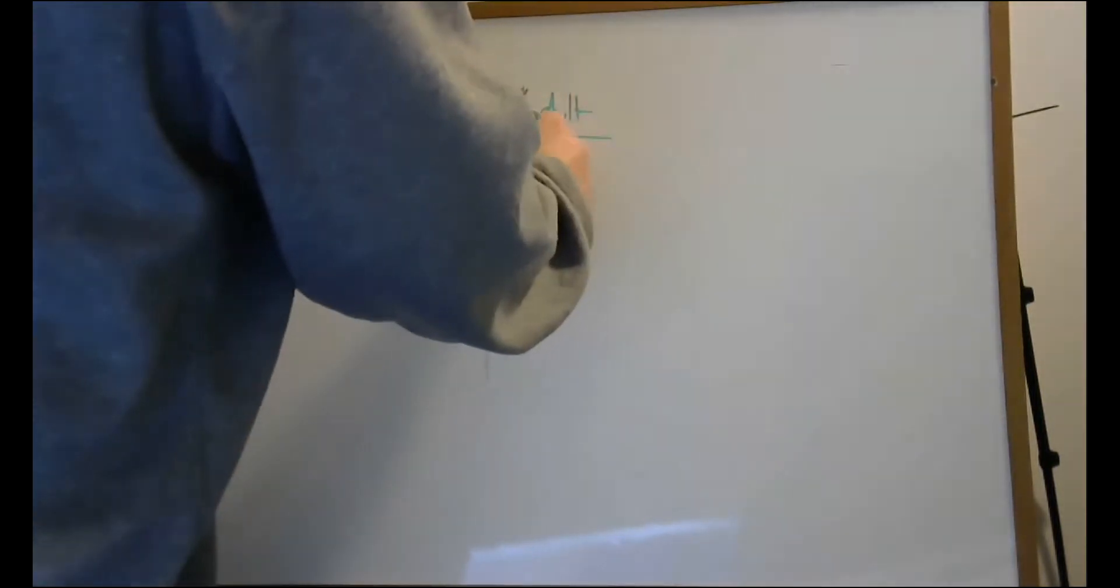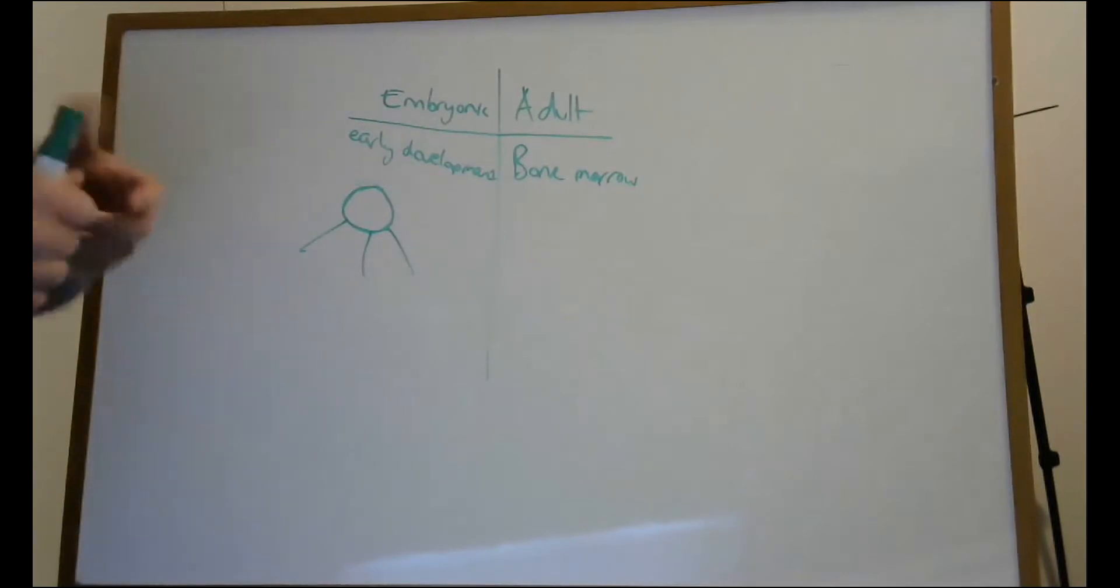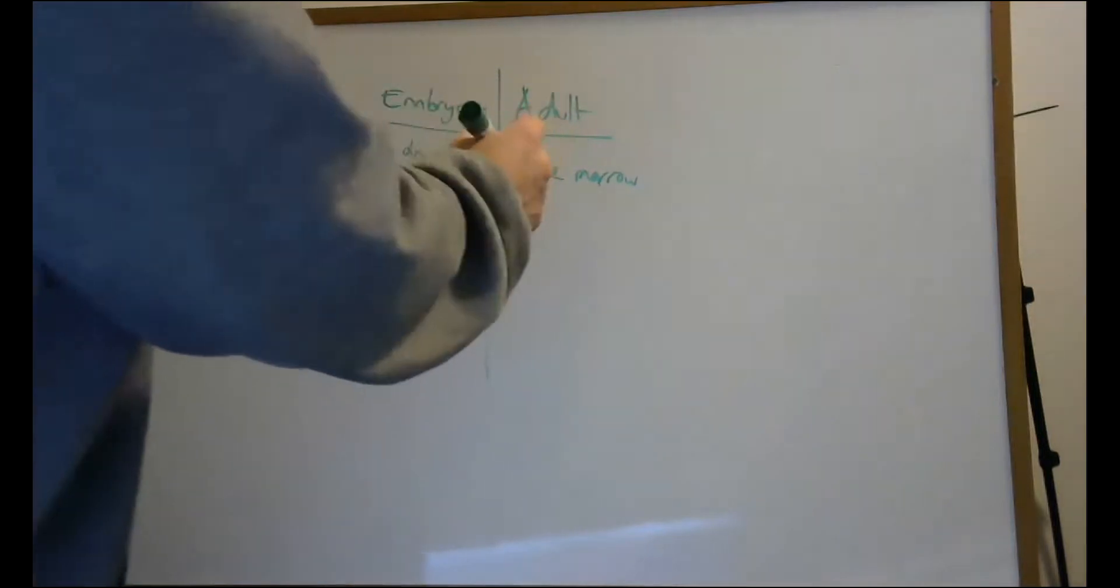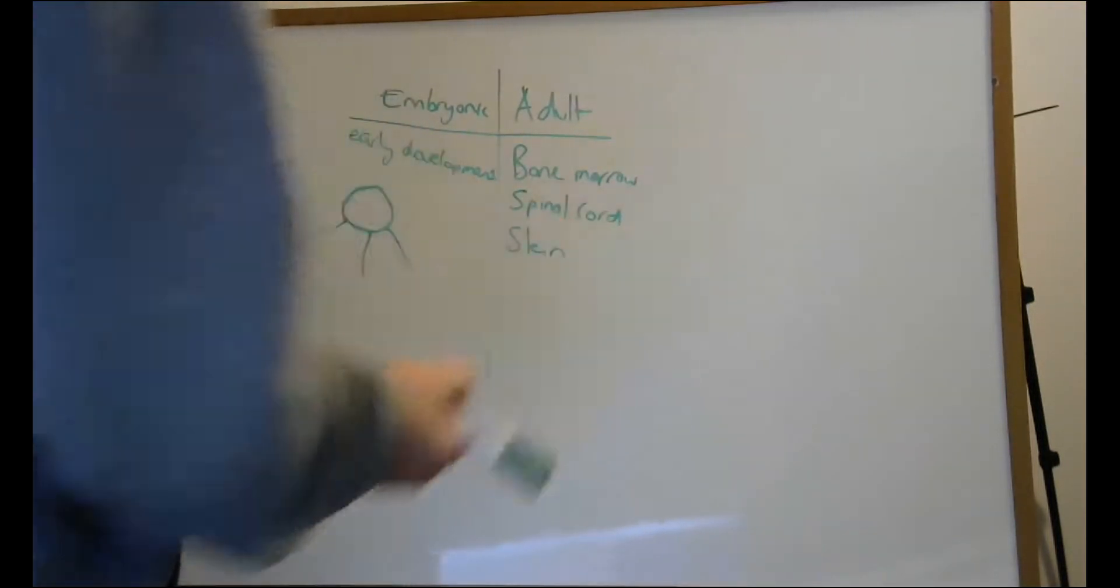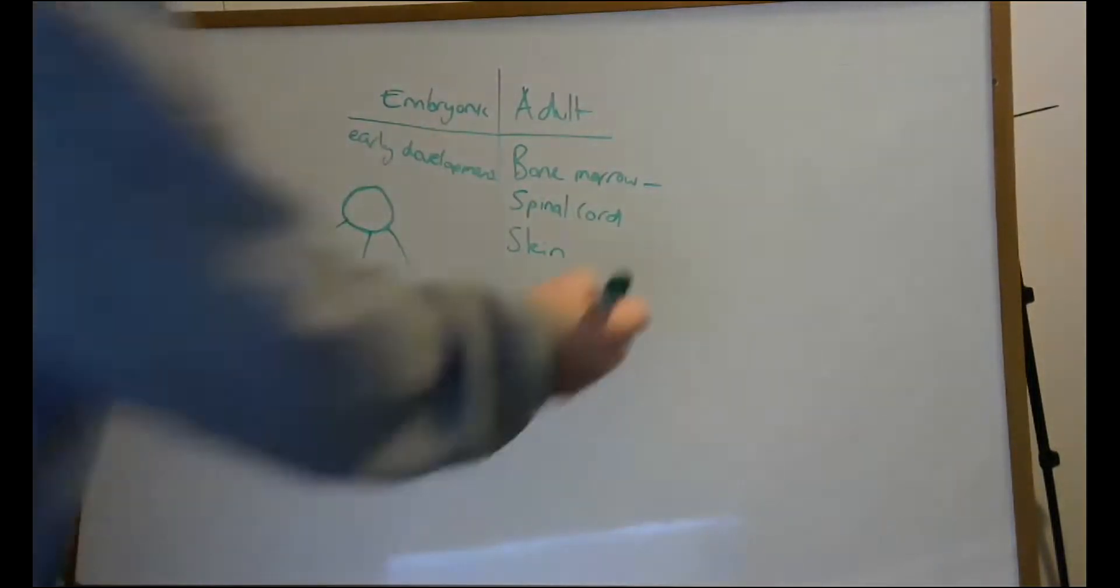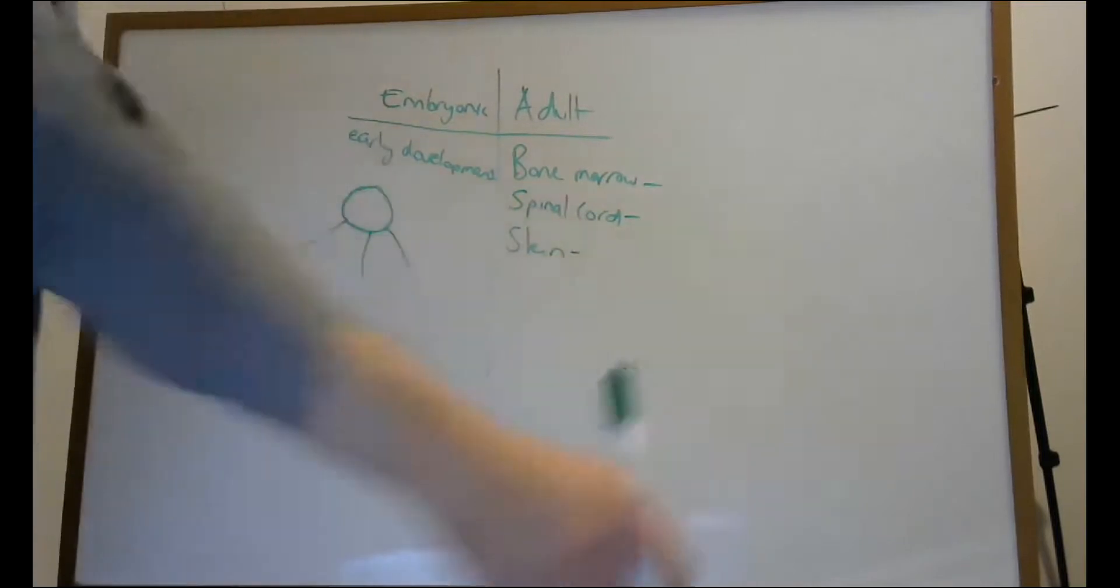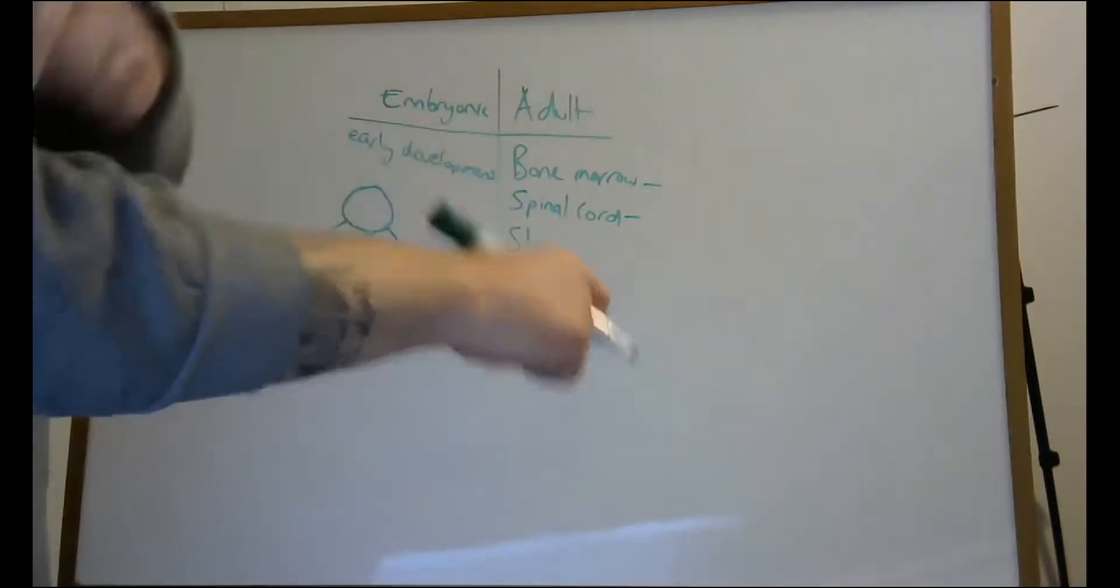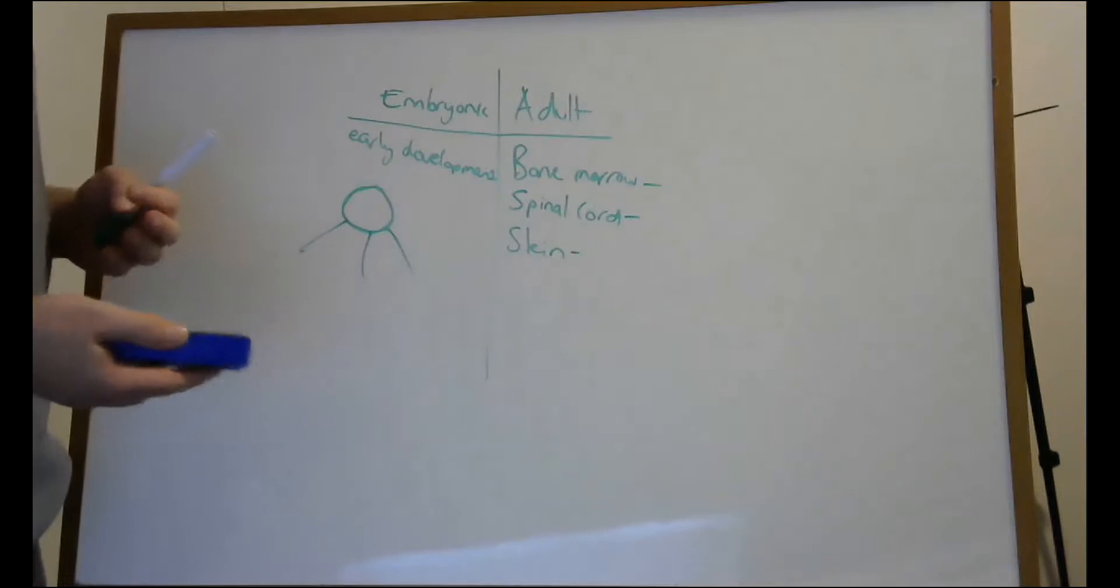Adult stem cells are present in bone marrow, hematopoietic stem cells which make all of the white and red blood cells in our body. We have them in the spinal cord and in the skin. They help to repair the spinal cord, though they're not very effective. The top layer of your skin is very active. If we weren't constantly creating new skin cells, we would suffer from skin cancer very quickly.